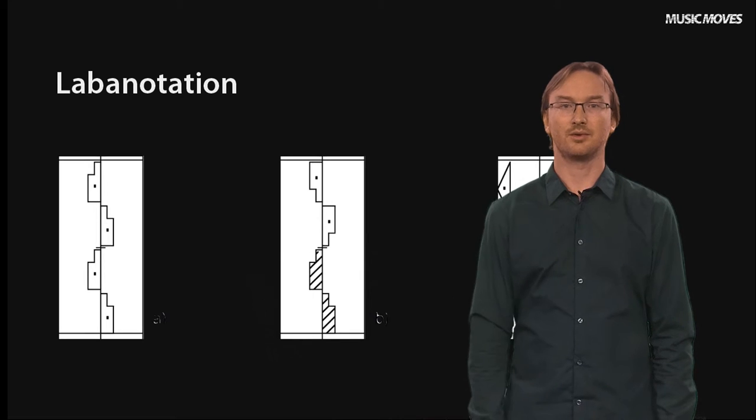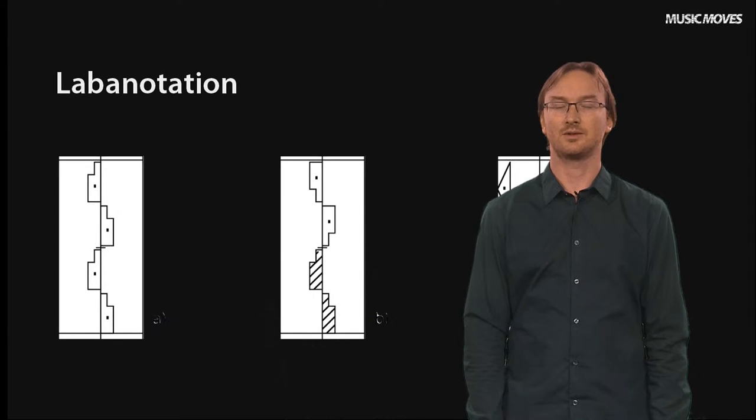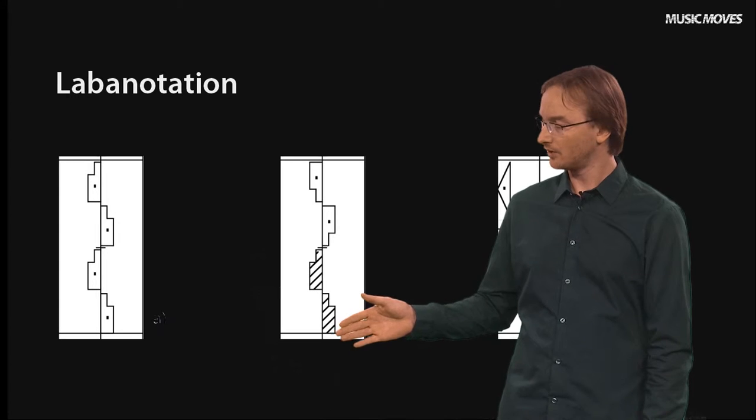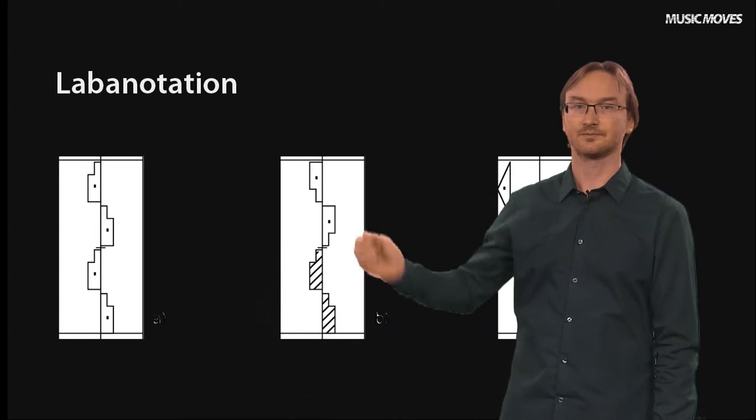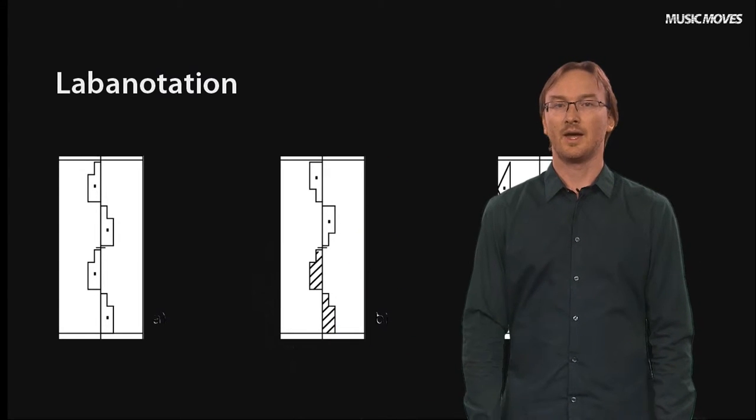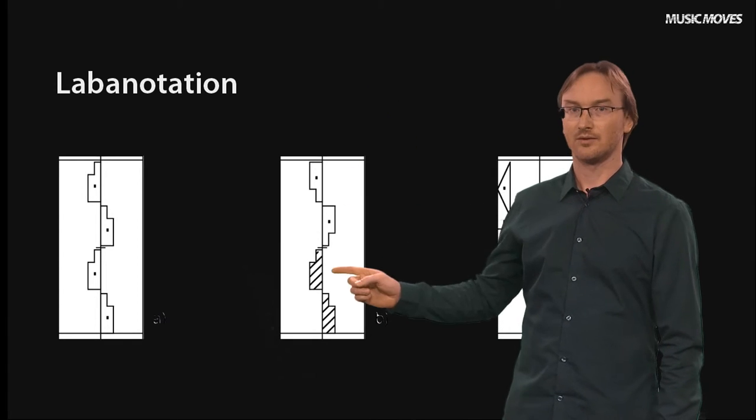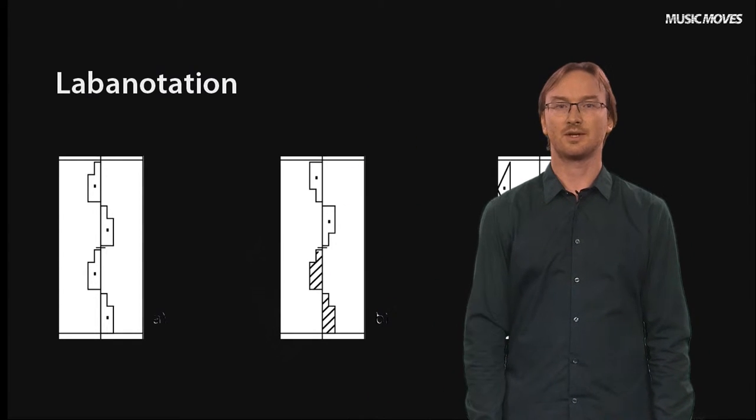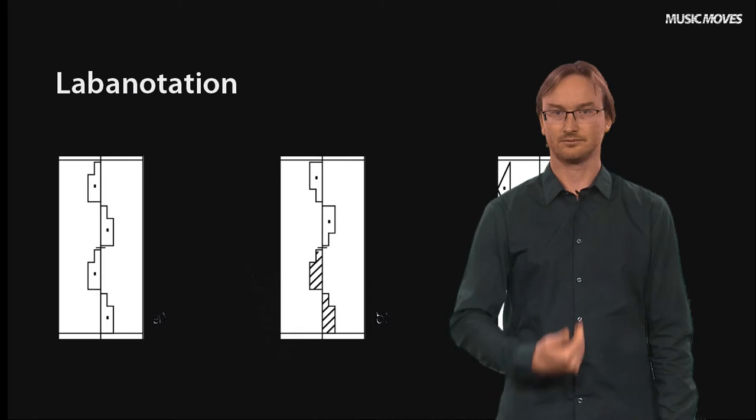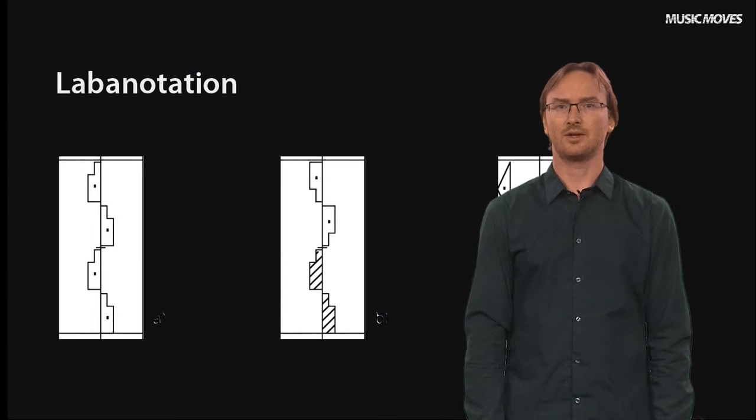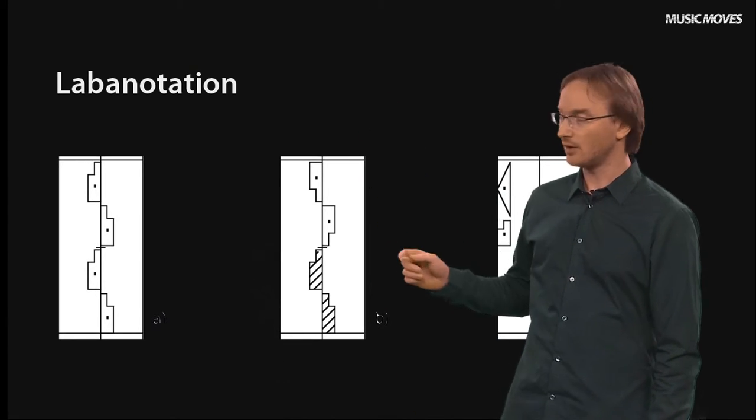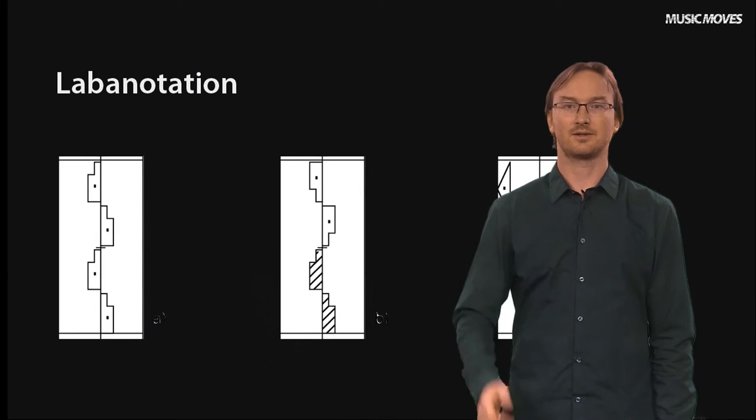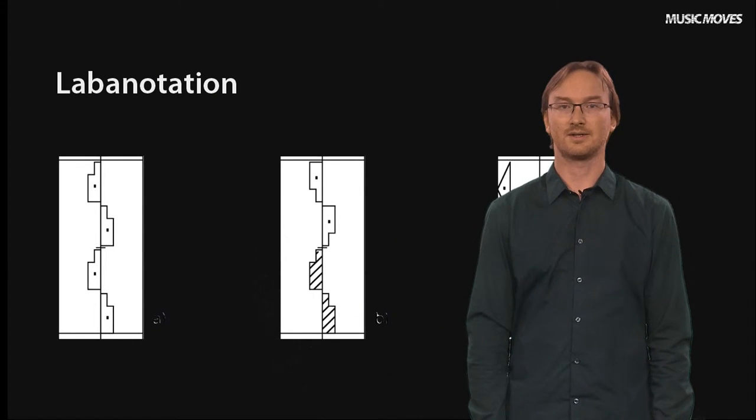Here we see an example of Laban notation with time running vertically from the bottom to the top. The vertical line in the center of each notation system marks the center of the body. Motion is then notated through different symbols on the left and right side of the center line, representing the left and right side of the body.